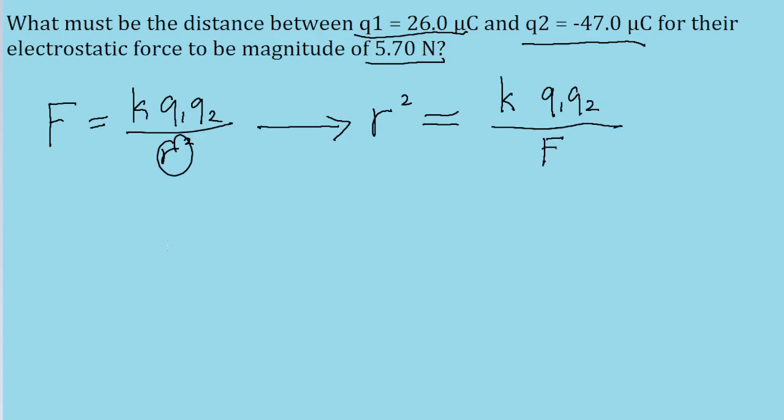Solving this for r is a simple matter of taking the square root of both sides of the equation. So the distance between the two particles is equal to the Coulomb constant multiplied by the product of the charges, divided by the force, all of that underneath a square root.